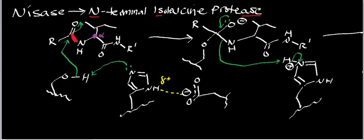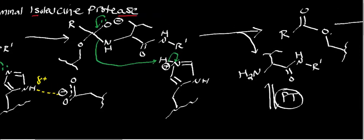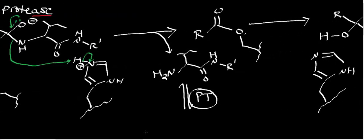Just like the cysteine protease — and similarly for C-terminal proteases — the amine is kicked off as the leaving group. We generate the amine again with three bonds to nitrogen, meaning it has a neutral charge. Remember: when nitrogen has three bonds and one lone pair, it is neutral.